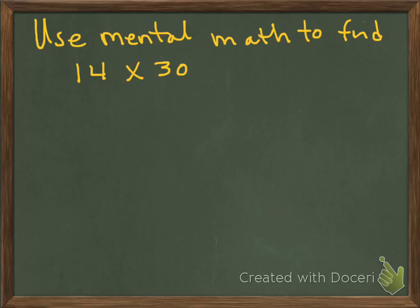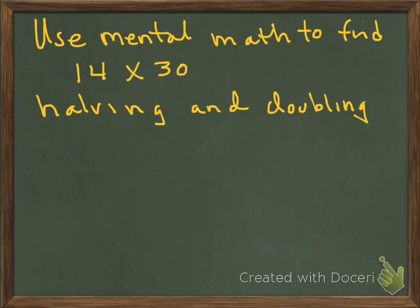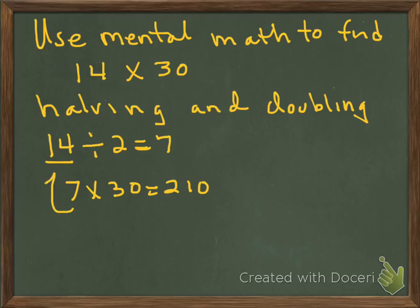Let's move on to another strategy. Now, the last strategy that I'm going to show you today is using mental math to find 14 times 30. But I'm going to introduce something very interesting to you. It's called halving and doubling. I'm going to cut one number in half, and then I'm going to double a little bit later. So what I'm going to do is I'm going to say 14 cut in half, which would be 14 divided by 2 equals 7. I'm going to multiply 7 times 30. And if you said that 7 times 30 was 210, you would be correct.